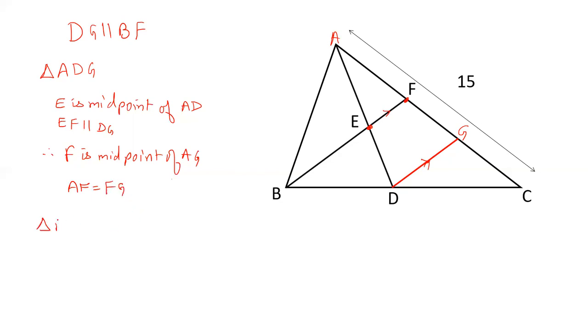Now we are taking triangle BCF. In this triangle, D is the midpoint of BC and DG is parallel to BF.